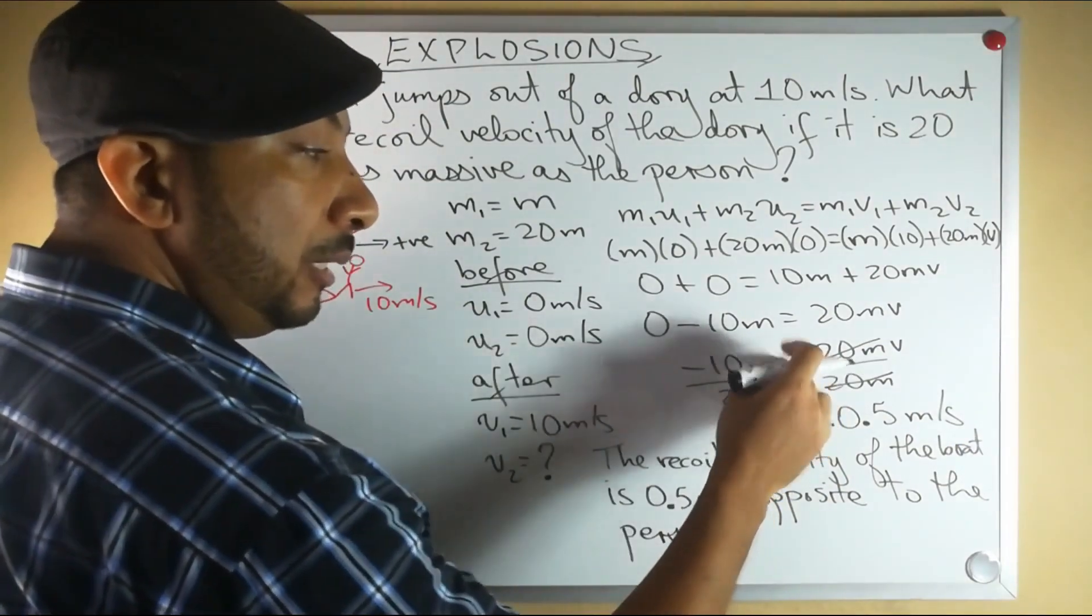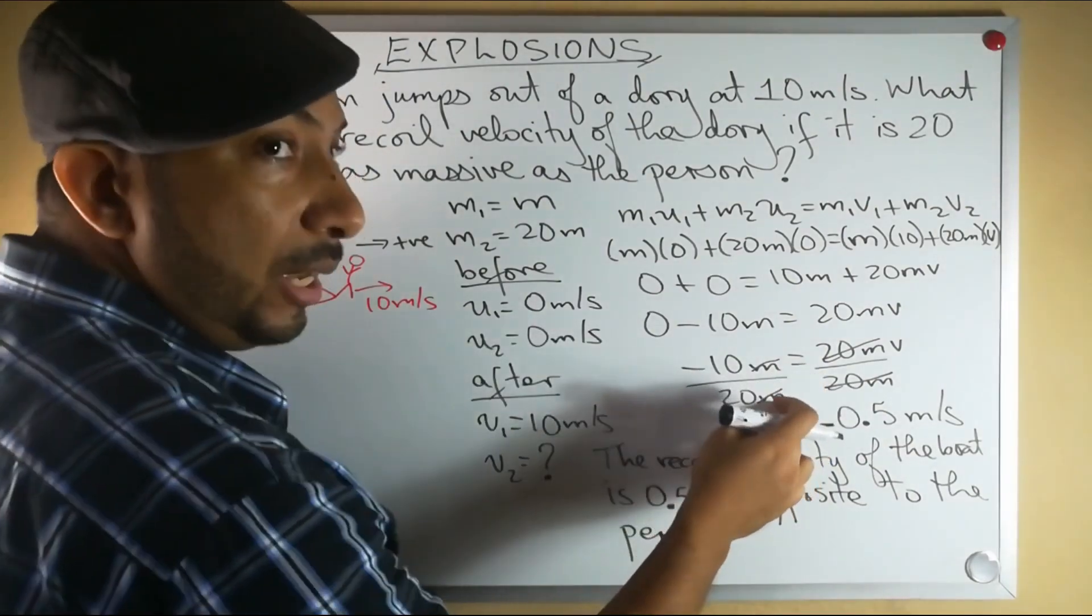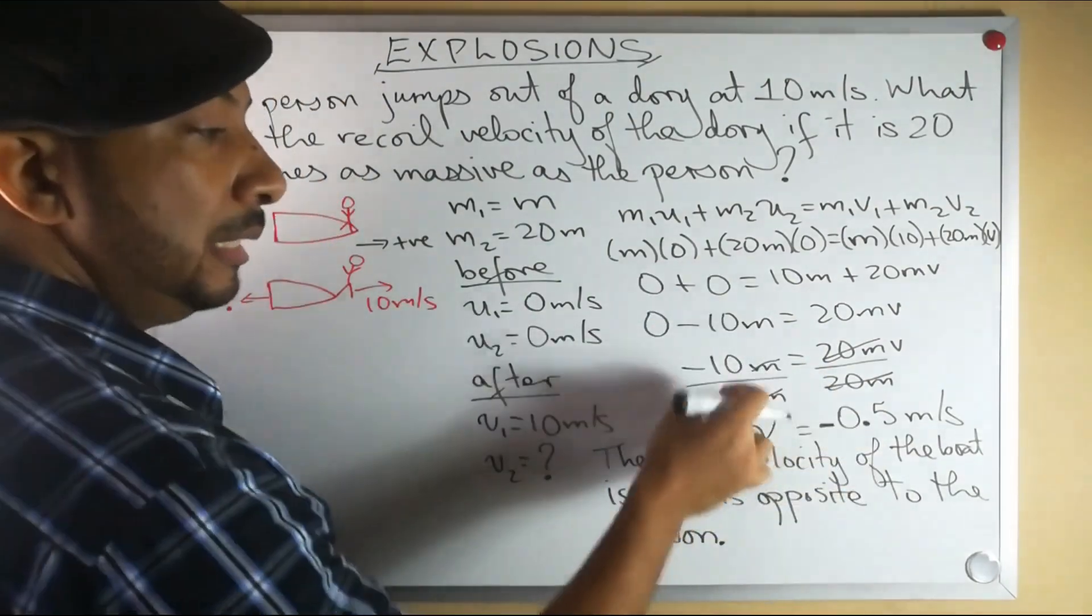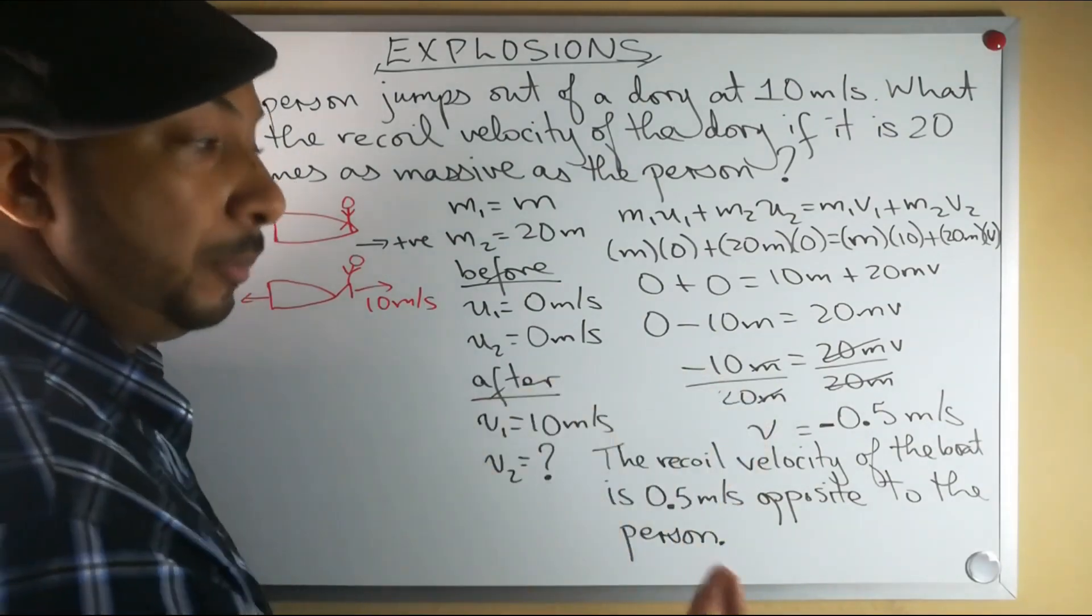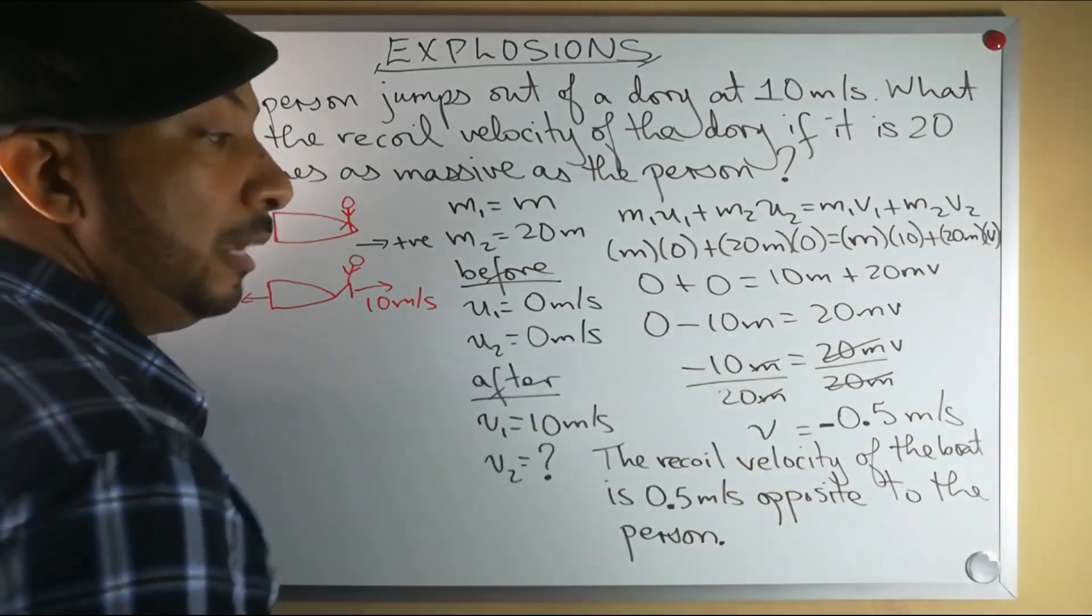In doing so, notice that the m's here will cancel out. Whatever the actual mass was, let's say maybe it was 50 kilograms the mass of the person, here you also have 50 kilograms in this mass, but it doesn't matter because then it would have still cancelled. So we have negative 10 divided by 20, so that gives us a velocity of negative 0.5 meters per second.